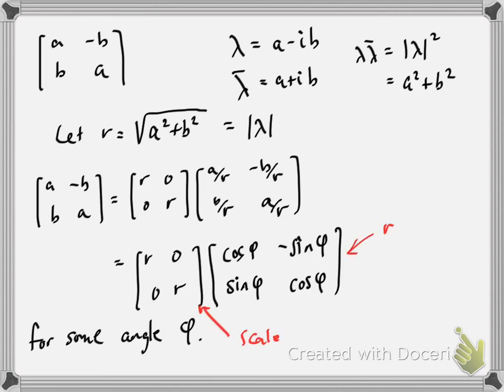So that tells us that this matrix C, which we're writing as [a -b; b a], can be thought of as a scaling combined with a rotation.